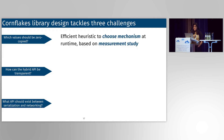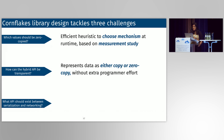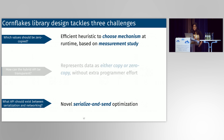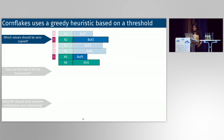For the first question of how we should decide between zero copy and copy, Cornflakes uses an efficient heuristic to choose the mechanism at runtime, which is derived from the measurement study. For the second question of how the hybrid API should be transparent, Cornflakes represents data as either copy or zero copy without extra programmer effort. If the programmer passes a raw pointer that's not in pinned memory, Cornflakes will transparently copy it to a pinned buffer. I'll be discussing the first and third design aspects today.